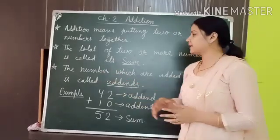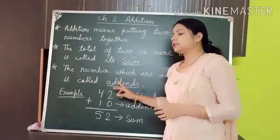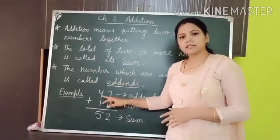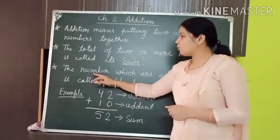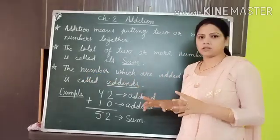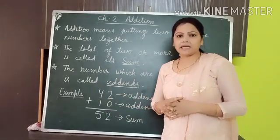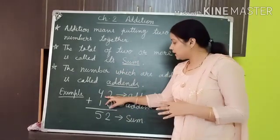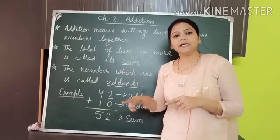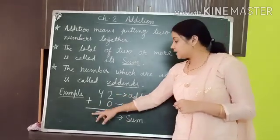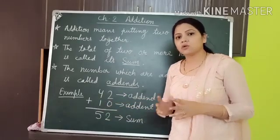The third fact is: the numbers which are added together are called addends. As you can see in the same example, I have added 2 numbers, 42 and 10. These numbers that are being added are known as addends. And the total number that we get after adding 2 numbers is known as the sum.